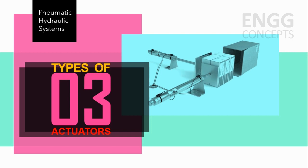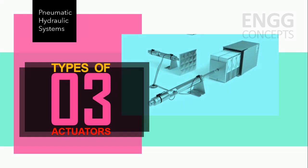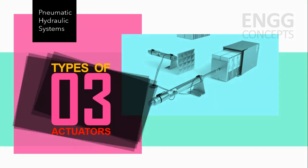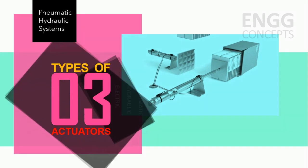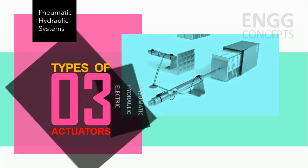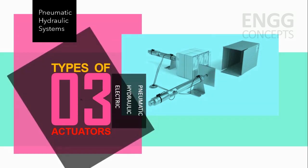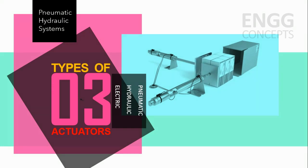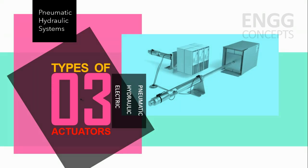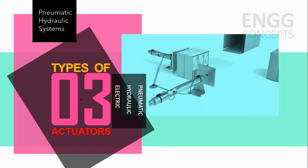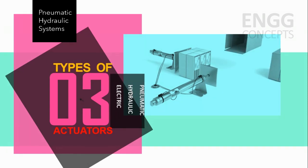There are three typical energy sources for an actuator: air, hydraulic fluid, or electricity. If the actuator uses air as a medium, it is known as a pneumatic actuator. If it uses hydraulic oil, it is known as a hydraulic actuator. And if it uses electric current as a medium, it is known as an electric actuator.